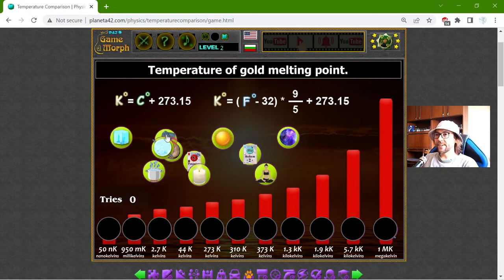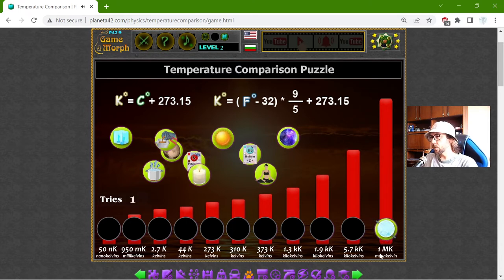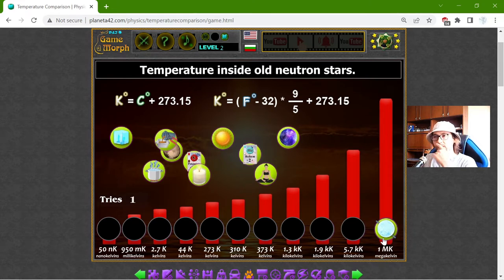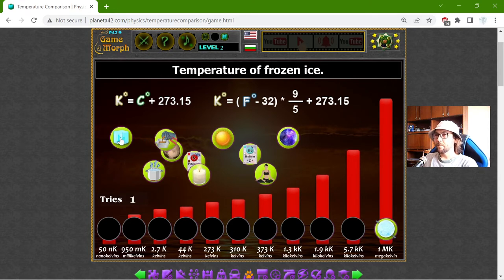Alright, again I will try not to lose some of these things. Alright, the temperature inside old neutron stars. Well, maybe this is the highest temperature that we have. Well, we cannot test it on the spot, but by calculations. That is, what is that? One mega Kelvin. So, is there something with one giga Kelvin or tera Kelvin? That remains a mystery.